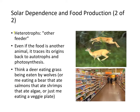And there are the heterotrophs — other feeders. Even if the food is another animal, it traces its origin back to the autotrophs and photosynthesis. Think about deer eating grass or being eaten by wolves, or eating a bear that ate a salmon, that ate a shrimp, that ate algae, or just eating a veg plate. We ultimately all go back to relying on autotrophs.